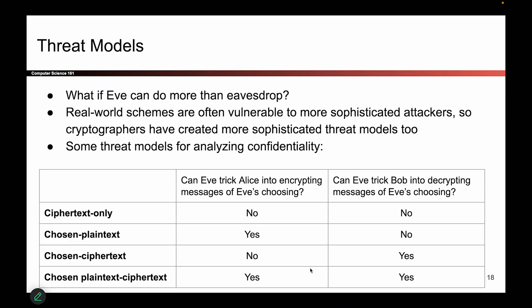We have all four combinations, each with a term. If Eve can do neither — only eavesdrop — that's called the ciphertext-only model. If Eve can trick Alice into encrypting messages but cannot trick Bob into decrypting, that's called chosen plaintext. If she cannot encrypt but can decrypt, that's called chosen ciphertext. And if she can do both — trick Alice into encrypting and trick Bob into decrypting — that's called chosen plaintext-ciphertext. It is the most powerful of the four models.